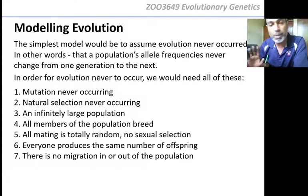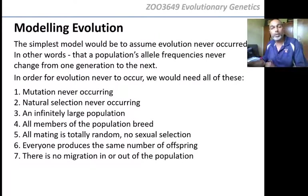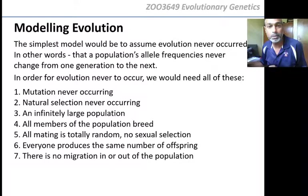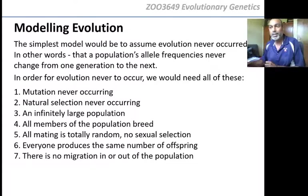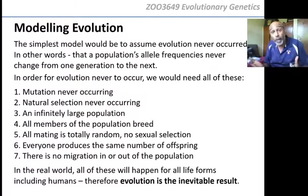You will need all seven of these things to be true in order to confidently say there is no such thing as evolution. If only one of them is not true, that argument is finished. And you look at even one of those things and you'll say — it's impossible to have an infinitely large population, it's impossible that all members are breeding, it's impossible that everybody has the same number of kids. Every one of these things is impossible, and all of them must happen for no evolution. So do you see how possible evolution is?